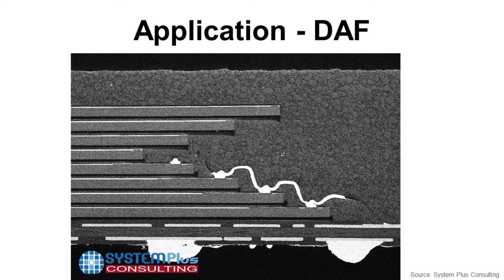This is one application of die-attach film for NAND flash memory. As you can see, at the die back side, there is a die-attach film layer.